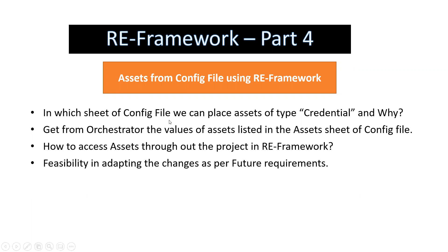I would be covering these four points: in which sheet of the config file we have to place assets, especially of the type credentials, and why we must place only in that sheet, and what happens if we don't — what error we would be facing. And also how to access assets throughout the project in RE Framework and get from Orchestrator the values of assets listed in the assets sheet of the config file. Also, how we can change credential or URL values without touching the code.